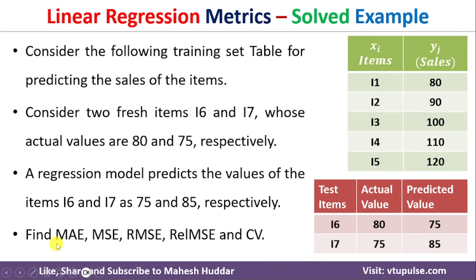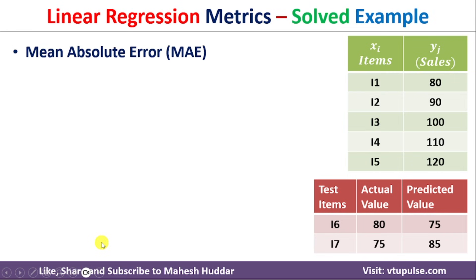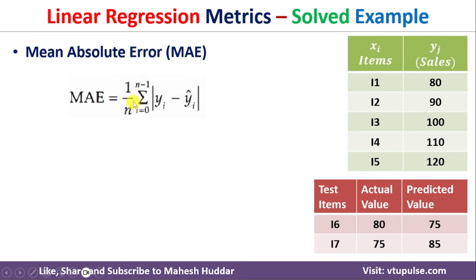We will start with the Mean Absolute Error. The formula for calculating MAE is: MAE = (1/n) × Σ |yi − ŷi|, where n is the number of test examples. In this case we have two test examples, so n = 2. We take the summation over all test examples, where yi is the actual output and ŷi is the predicted output.